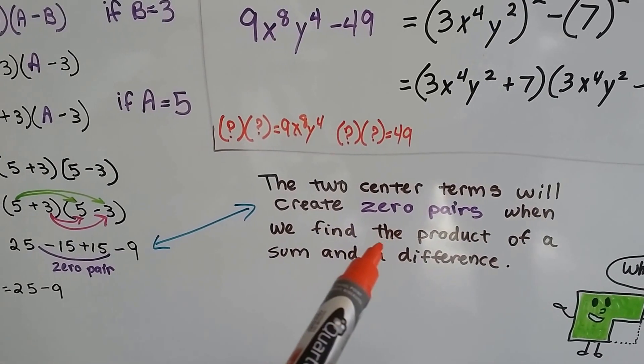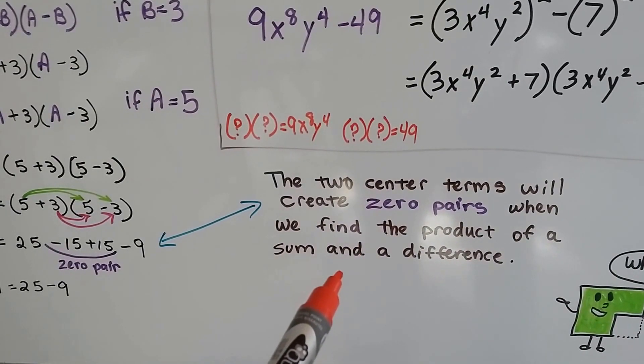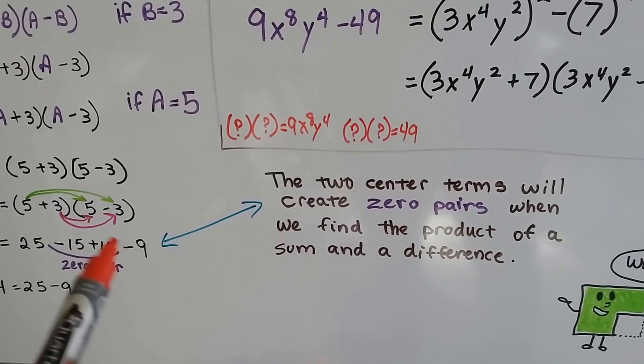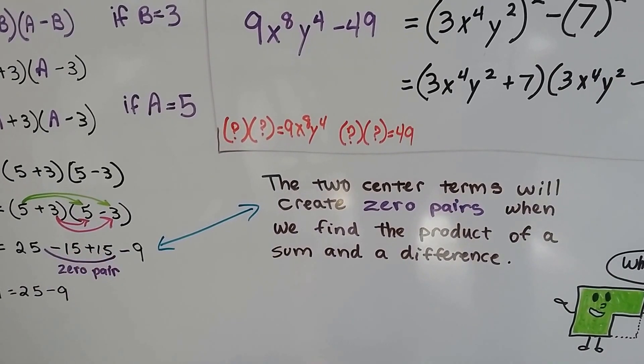When we do this, the two center terms will create zero pairs when we find the product of a sum and a difference. It's kind of like a special polynomial.